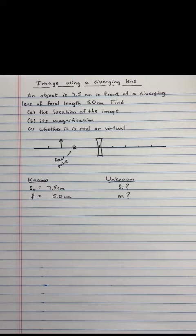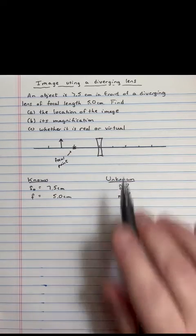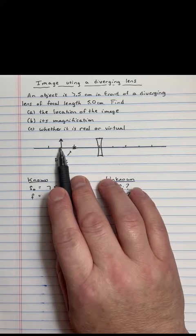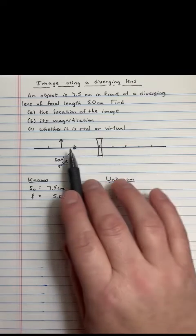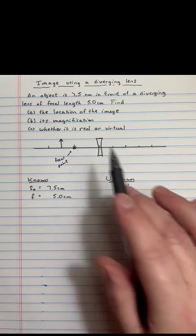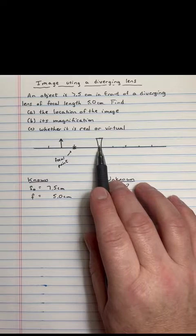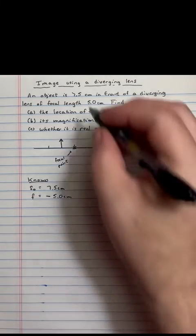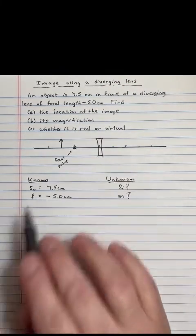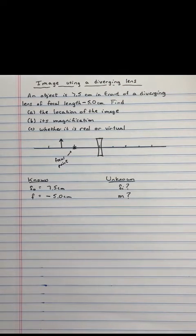So this is the focal point right here. That's different than it was for a converging lens. What it means mathematically is that we really need to place a negative sign on the focal length. The convention is, because light passes through lenses, that if you have an object on the left-hand side, then everything that passes through on the right-hand side is positive. But if the focal point is here, that means then that the focal length, which is from the lens to the focal point, is a negative.